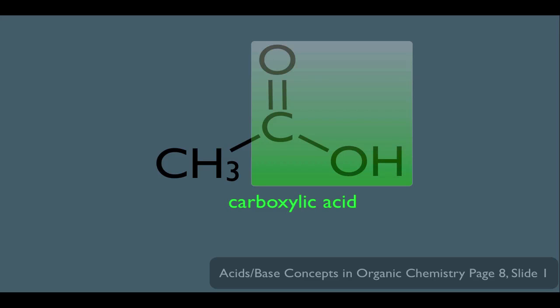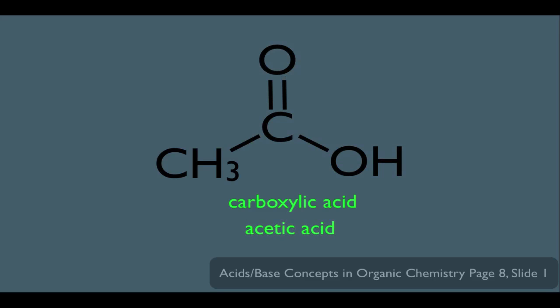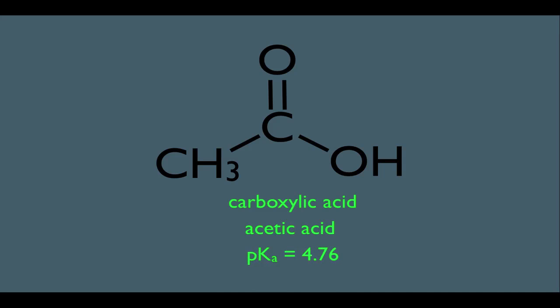This part of the molecule right here is the carboxylic acid functional group. This particular carboxylic acid is called acetic acid. Acetic acid has a pKa of roughly 4.76, and as a general rule, carboxylic acids in organic chemistry have a pKa of around 5. We'll see how other features of the molecule could make the pKa higher or lower in another lecture.